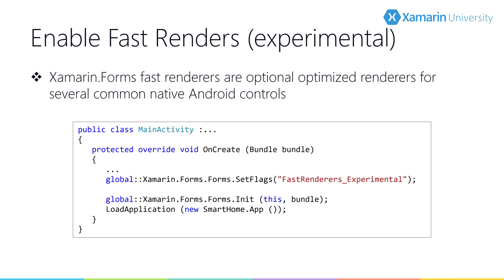Traditionally, most original control renderers on Android are composed of two views: a native control such as a button or text view, and a container view group handling layout and gesture work. This creates two views for each logical control, resulting in a more complex visual tree requiring more memory and processing. Fast renderers reduce this to a single view — improving performance by creating fewer objects, a less complex view tree, and less memory use, which also results in fewer garbage collection pauses. Fast renderers are currently considered experimental and can be enabled by calling Forms.SetFlags from the Android main activity before calling Forms.Init.